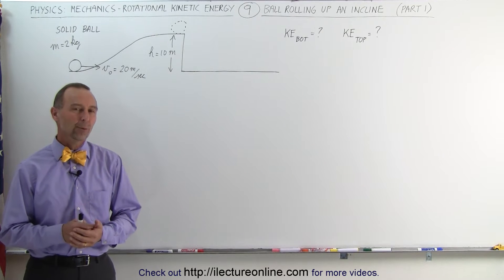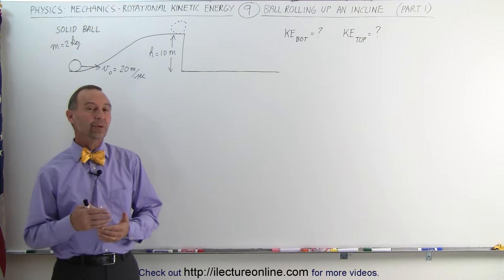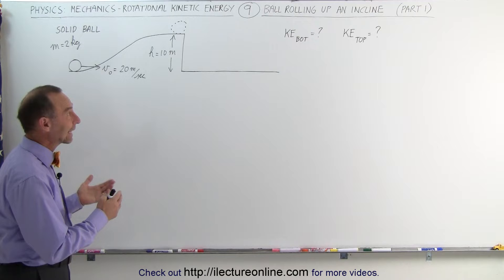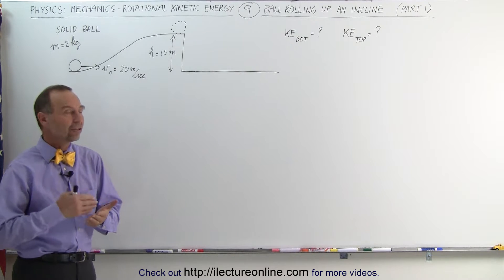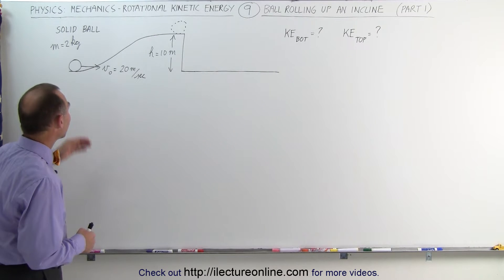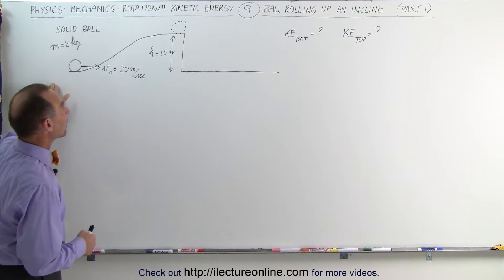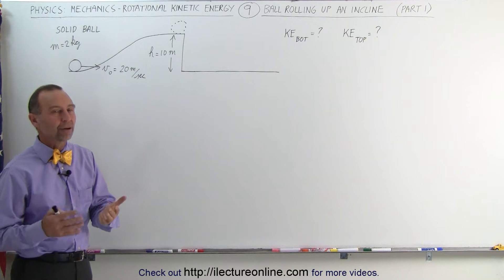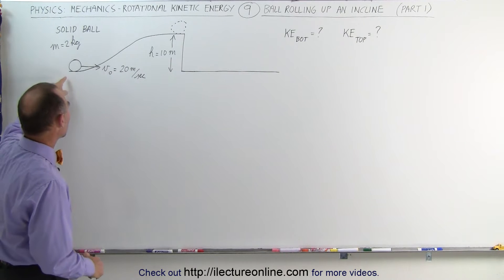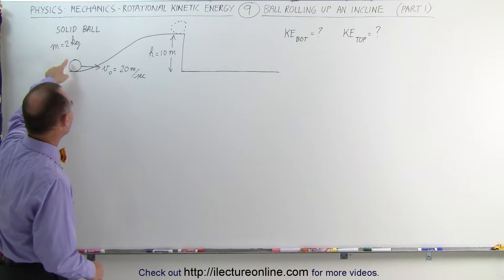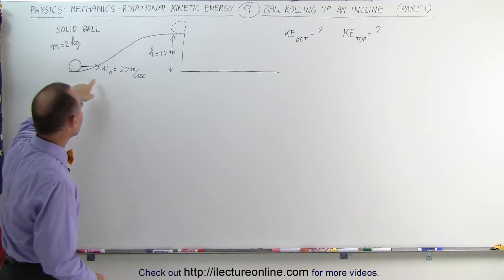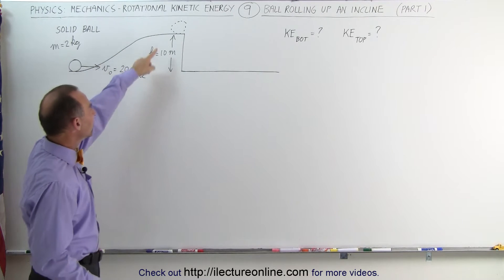Welcome to Electron Line. A really good example for determining the kinetic energy, both rotational and translational kinetic energy, is this example right here. And we're going to do this in three parts. We're going to have a solid ball with a mass of 2 kilograms roll up a hill of 10 meters.